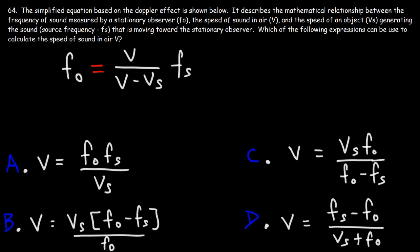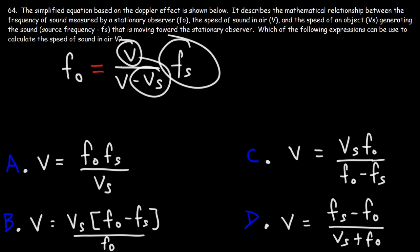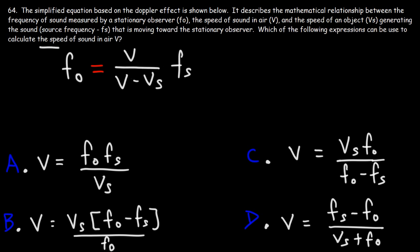Here we have the simplified version of the Doppler effect formula. It describes the relationship between the frequency of sound measured by a stationary observer FO, the source frequency Fs — the object generating the sound — V, the speed of sound in air, and Vs, the speed of the object generating the sound. We want to determine the speed of sound in air, so we need to isolate the variable V.